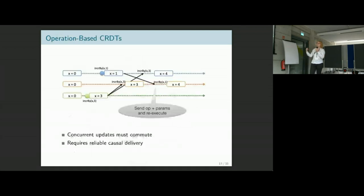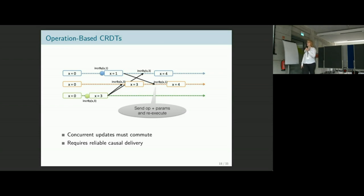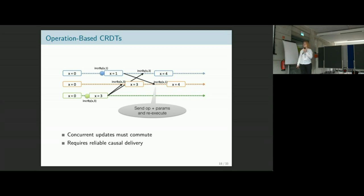There are two major flavors of CRDTs: operation-based CRDTs and state-based CRDTs. In operation-based CRDTs, we ship the operation. For example, a replicated counter initially set to zero — we increment it on one replica by three, on another replica by one, and forward the updates. In the end, all replicas that have received all updates should have the same state. We send operations and re-execute them on the local state. This works simply when operations commute — for a counter, incrementing by one then three is the same as three then one; you always get four.